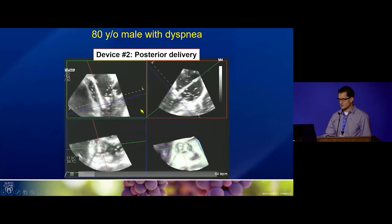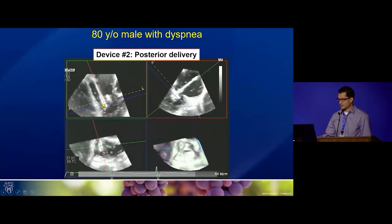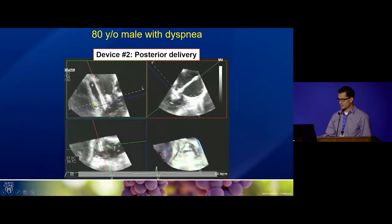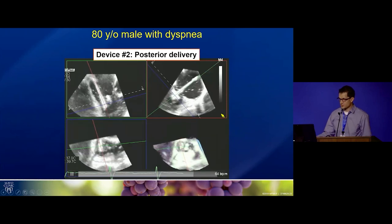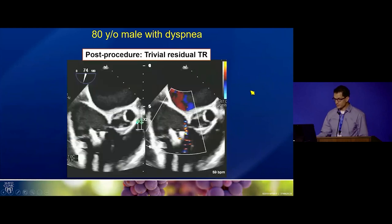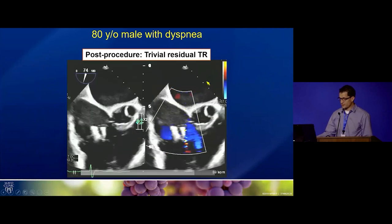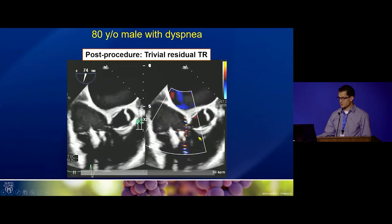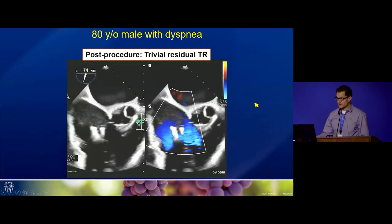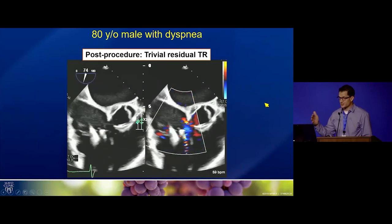We placed the first device and decided to add a second device just posterior to the first to address residual TR. After both devices were released, this was a beautiful result — two clips with just trivial residual TR. This case demonstrates how patient optimization can lead to excellent procedural outcomes.